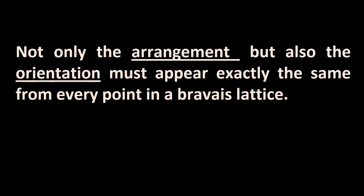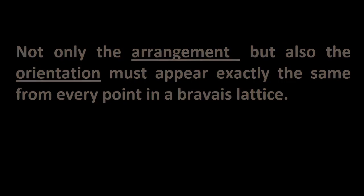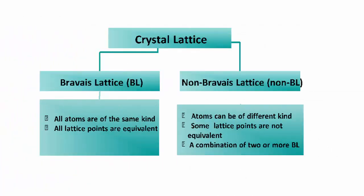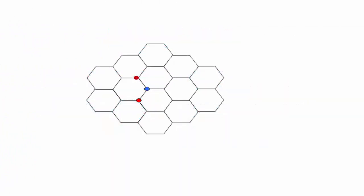Non-Bravais Lattice. Not only the arrangement but also the orientation must appear exactly the same from every point in a Bravais Lattice. The red side has a neighbor to its immediate left, the blue one instead has a neighbor to its right.